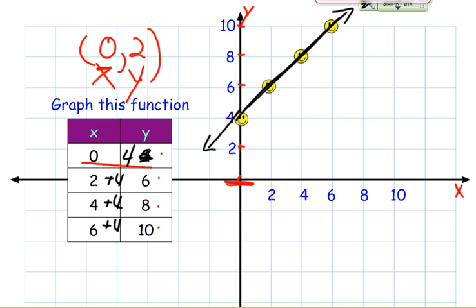Because if I were to continue my table and say 8, it's going to be a plus 4, so it's going to be a 12. So I'd be able to go 8 over up to 12, which would be somewhere way up here. And so we have that idea.